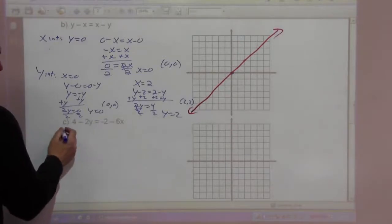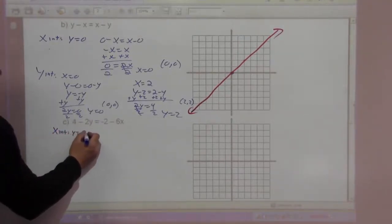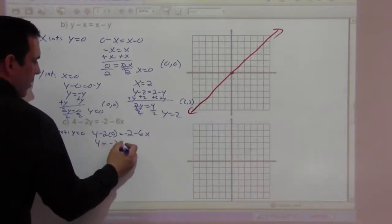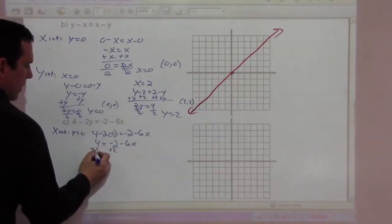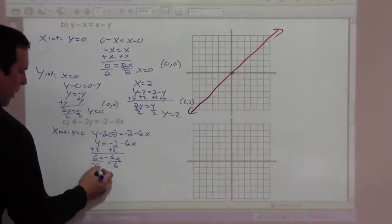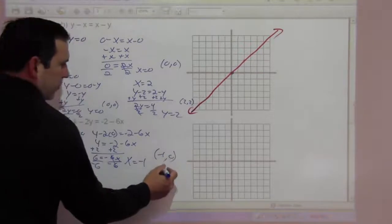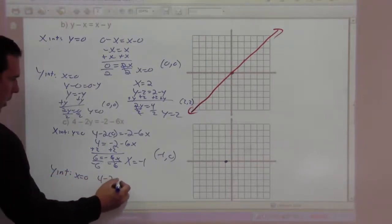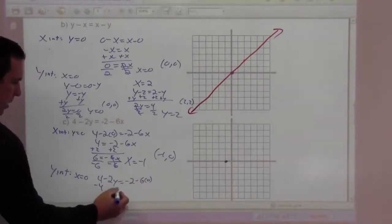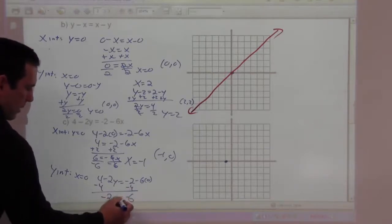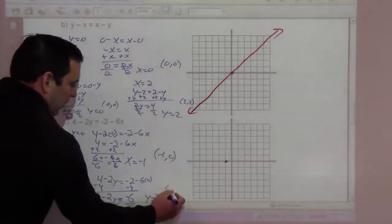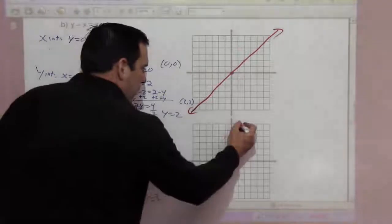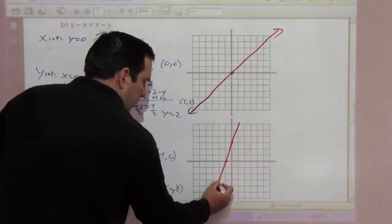Let's go on to the next one. We have 4 minus 2y equals negative 2 minus 6x. For the x-intercept, y equals 0, so 4 equals negative 2 minus 6x. Add 2 to both sides, 6 equals negative 6x. Divide by negative 6, x equals negative 1, so negative 1, 0. For the y-intercept, x is 0, so 4 minus 2y equals negative 2. Negative 2y is negative 6, and divided by negative 2, y equals 3. So we have 0, 3. There's our line.